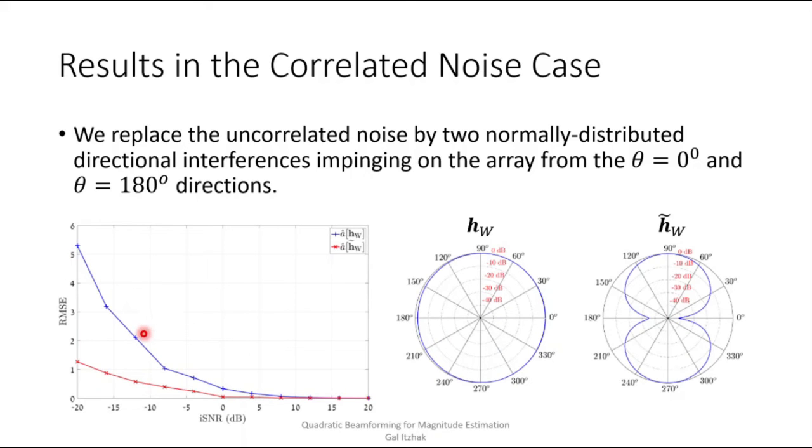And as with the uncorrelated noise case, as the input SNR increases, the RMSE with both beamformers converges to zero. And addressing the beam patterns here at the right, we note that while here the linear Wiener exhibits a constant all-pass spatial beam pattern, the quadratic Wiener achieves an over minus 40 dB attenuation in both interfered directions. This is done while keeping the desired signal direction here at theta equals 90 degrees completely distortionless. And clearly such a performance cannot be obtained by using any linear beamformers of length M equals 2 sensors.